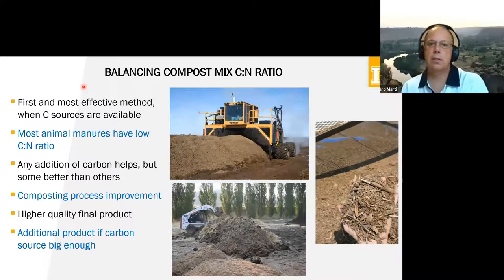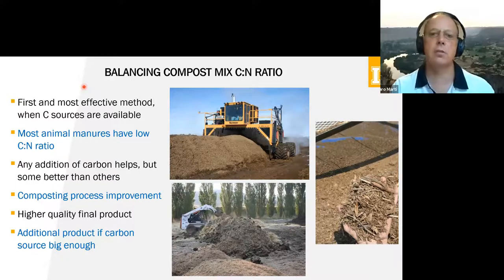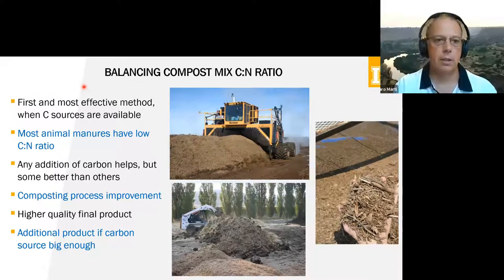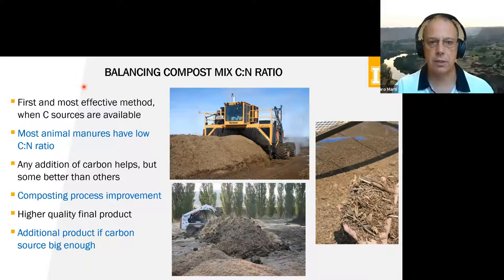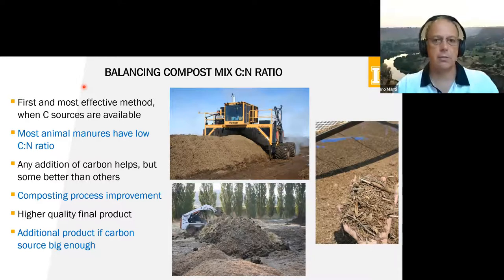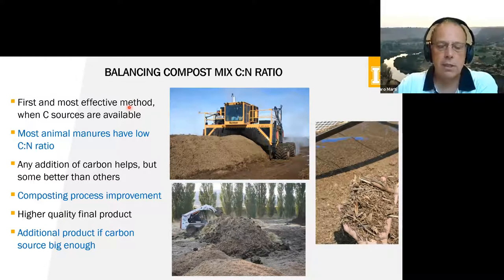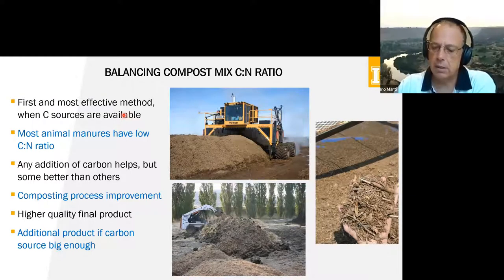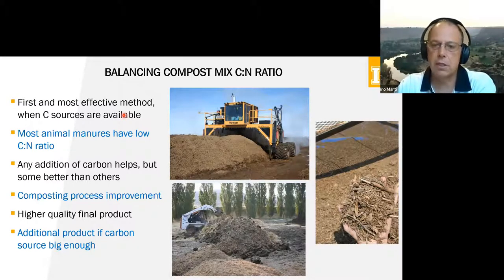Balancing the compost mix carbon-to-nitrogen ratio is the first method I will try, as the most effective. But that depends on carbon sources being available. Most animal manures — dairy, swine, poultry — don't have by themselves the carbon-to-nitrogen ratio we strive for, which is a 30-to-1 mix. Most dairy manures are in the teens, from 12 to 20 if you're using bedding. Any addition of carbon helps, but certain carbon sources are better than others, especially if you mix a source with chunks of a couple of centimeters or one inch in size alongside small pieces, giving aeration while also providing available carbon.